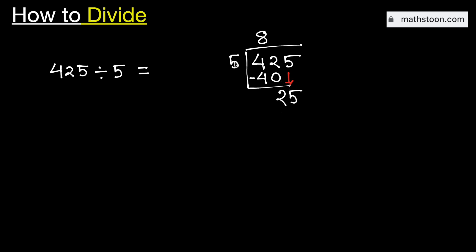And we know that 5 times 5 is 25. Subtract, we get 0.